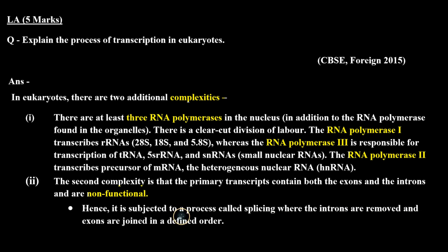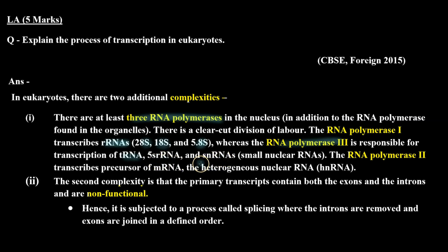RNA polymerase 1 transcribes rRNA — that is 28S, 18S, and 5.8S rRNA. RNA polymerase 3 transcribes tRNA, 5S rRNA, and snRNAs, i.e. small nuclear RNAs. Then RNA polymerase 2 transcribes heterogeneous nuclear RNAs, i.e. hnRNA, which is the precursor of mRNA.